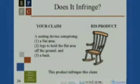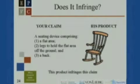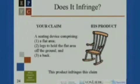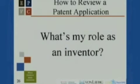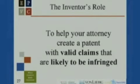So what about this orange device, the rocking chair? Does that one infringe? Yeah, it does. It's got rockers on it, which is not one of the elements of your claim, but it can have more elements than your claim and still infringe. So this orange device does infringe that claim. So what is your role here? Your role is not to write the application yourself. Your role is to help your patent attorney create a valid patent that's likely to be infringed.